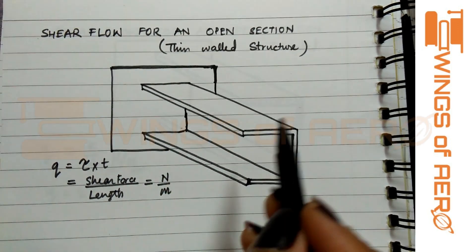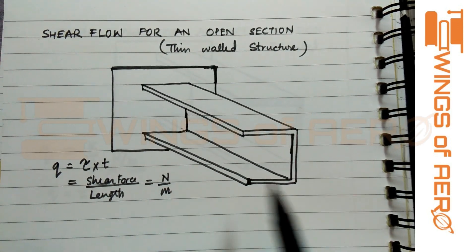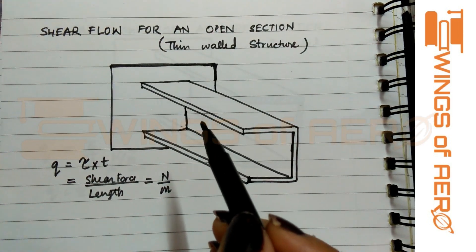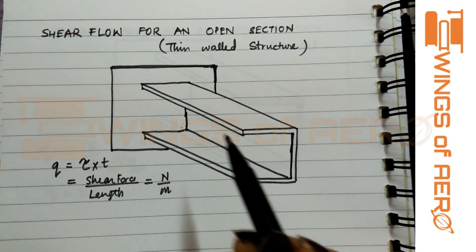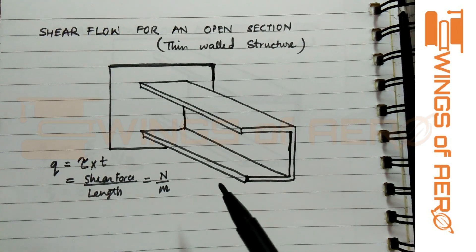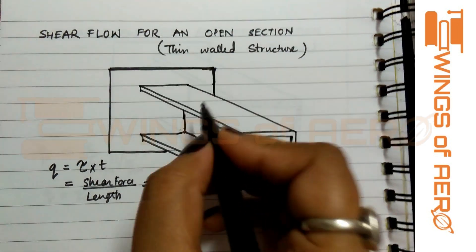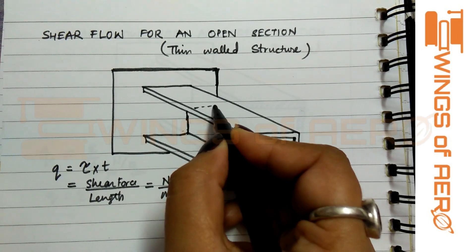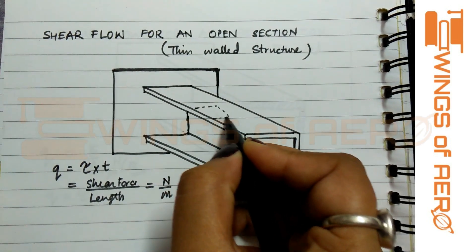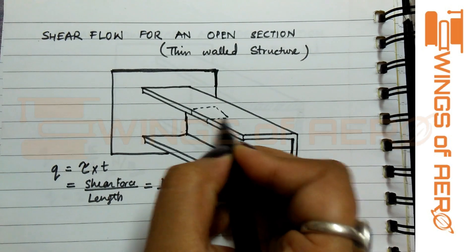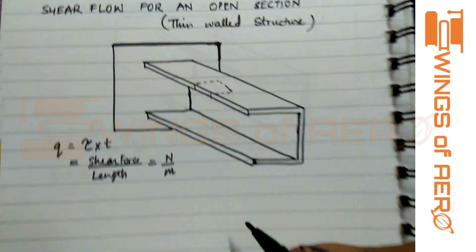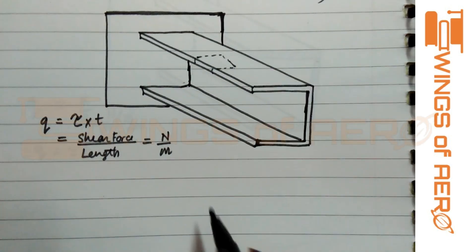First, for a cantilever beam, consider a cantilever beam. From that point, we will take a small elemental area of that cantilever beam. Let's consider this. Now let's enlarge this diagram and draw it.